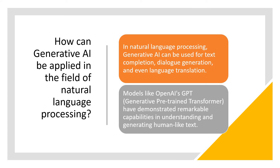How can Generative AI be applied in the field of NLP? In NLP, generative AI can be used for text completion, dialog generation, and translation. We can take the example of OpenAI's GPT, which is the Generative Pre-trained Transformer, which has demonstrated excellent capabilities in understanding and generating human-like text. On the other side, Google's Bard is doing the same, and many LLMs and generative AI applications are being built and they are really stunning.